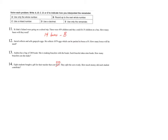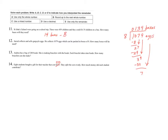Question 12 says Jared collects and sells gargoyle eggs. He collects 1,079 eggs, which can be packed in boxes of eight. How many boxes will he need? I have 1,079 eggs put into groups of eight, and each group of eight is one box. 8 does not go into 1; it goes into 10 once; 8 goes into 27 three times; and into 39 four times. So I have 7 eggs left over. Assuming he wants to pack all of his eggs, 134 boxes won't be enough — he needs 134 plus one more box for those seven eggs, so 135 boxes total. We rounded up — Strategy B.